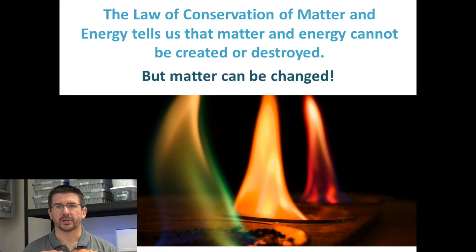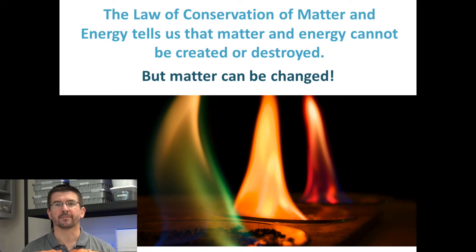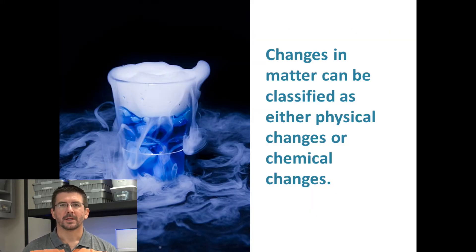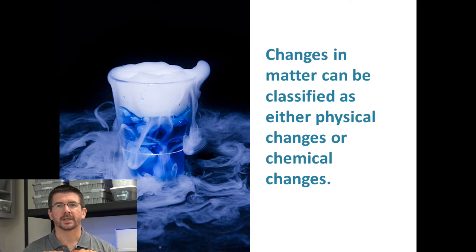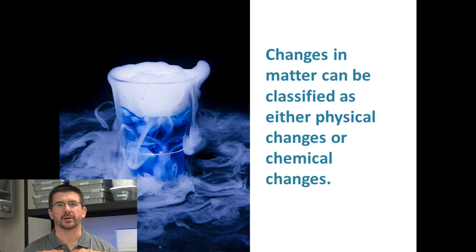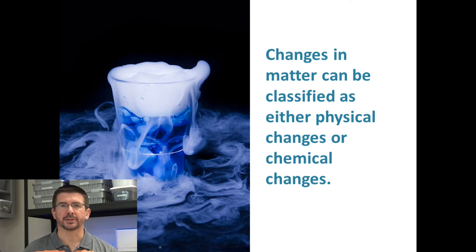Sometimes when matter is changed, it may just change a little bit in its appearance but remain the same substance. Other times when matter is changed, it can form completely new substances. Just like we had two different types of properties to describe matter, there are two different types of changes that matter can undergo, and these are called physical changes and chemical changes.